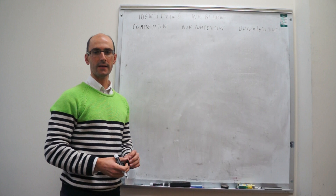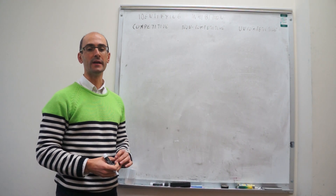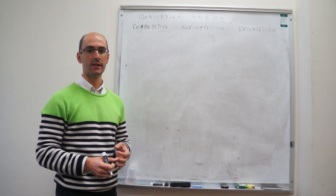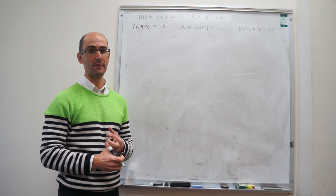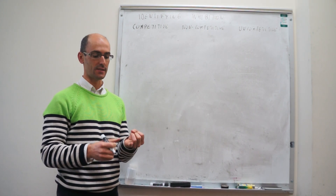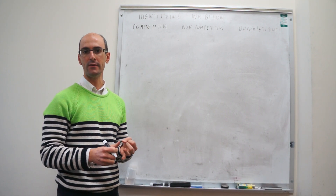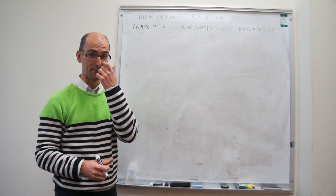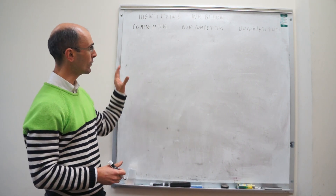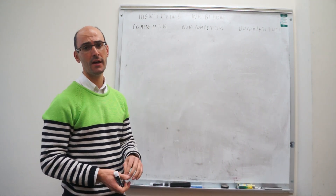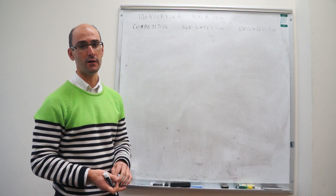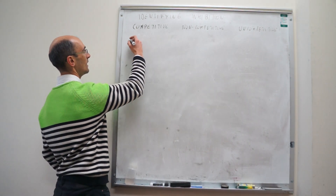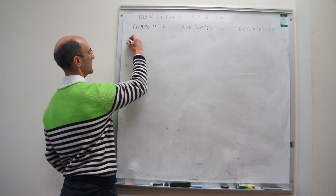In this video, I explain how to identify whether the inhibition that an enzyme might experience is either competitive, non-competitive, or uncompetitive. We've already derived the rate law for each one of these inhibitions, and we can just rewrite them here.